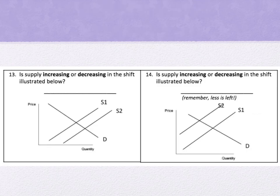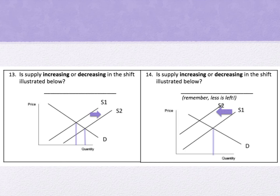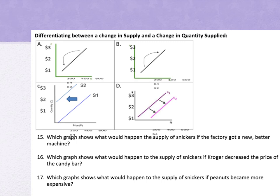Question 13: is supply increasing or decreasing in the shift illustrated? We have S1 and S2 labeled on the graph. The arrow shifts to the right — that means we move from our original equilibrium point to a new one, so that's definitely an increase in supply. For question 14, looking at S1 and S2 intersecting along the demand line — the curve shifts to the left. Left is less, so we look at the new equilibrium point and that is a decrease.